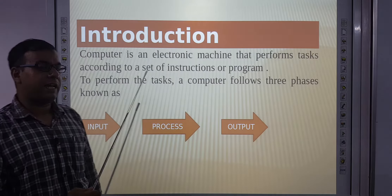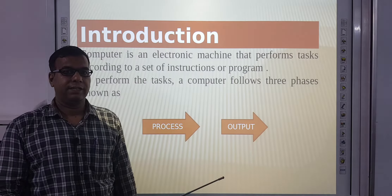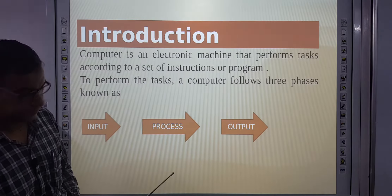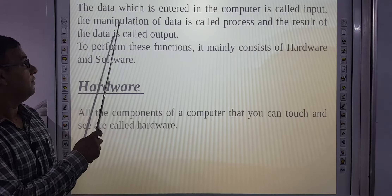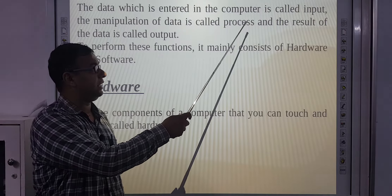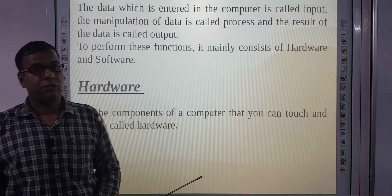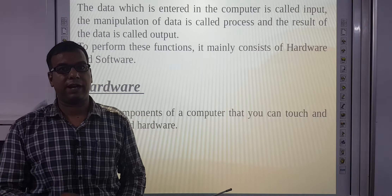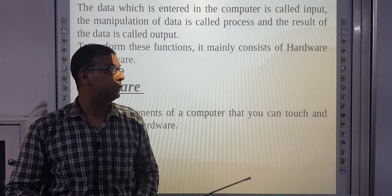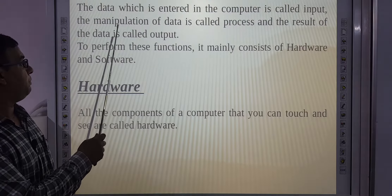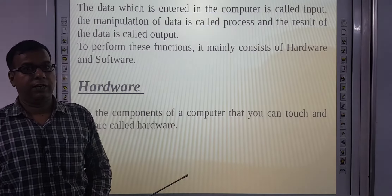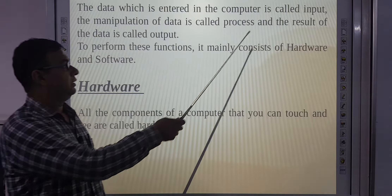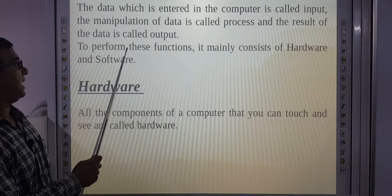Computer kisi bhi task ko perform karne ke liye three phases use karta hai: input, process, and output. The data which is entered in the computer is called input. The manipulation of data is called process, and the result of the data is called output.